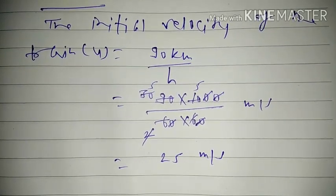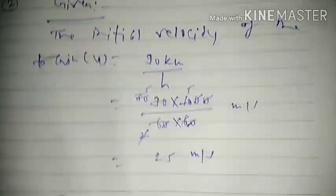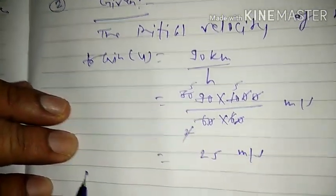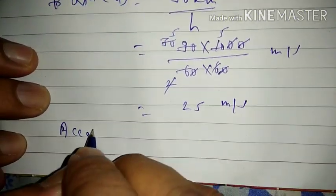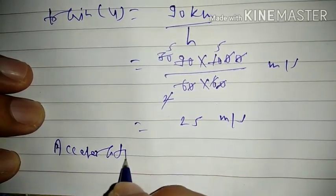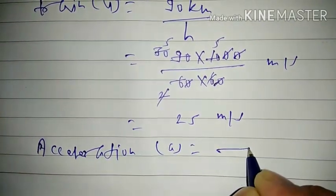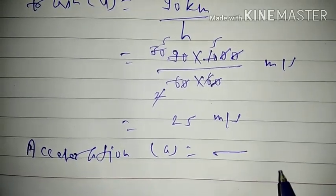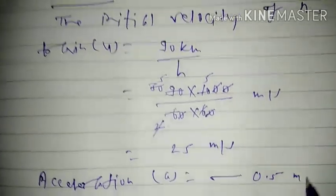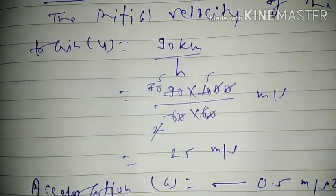The second data: brakes are applied to produce uniform acceleration. So acceleration a is equal to minus 0.5 meter per second square — the acceleration is negative.